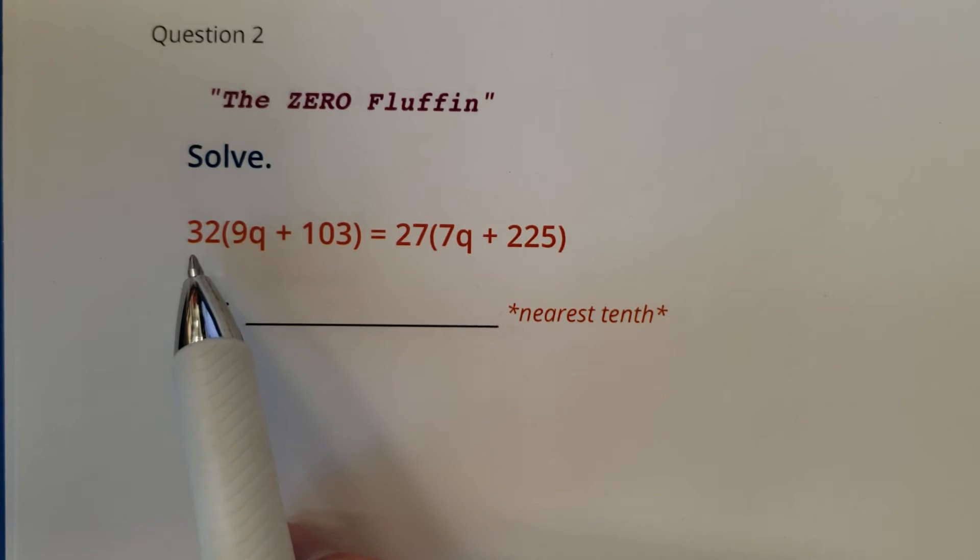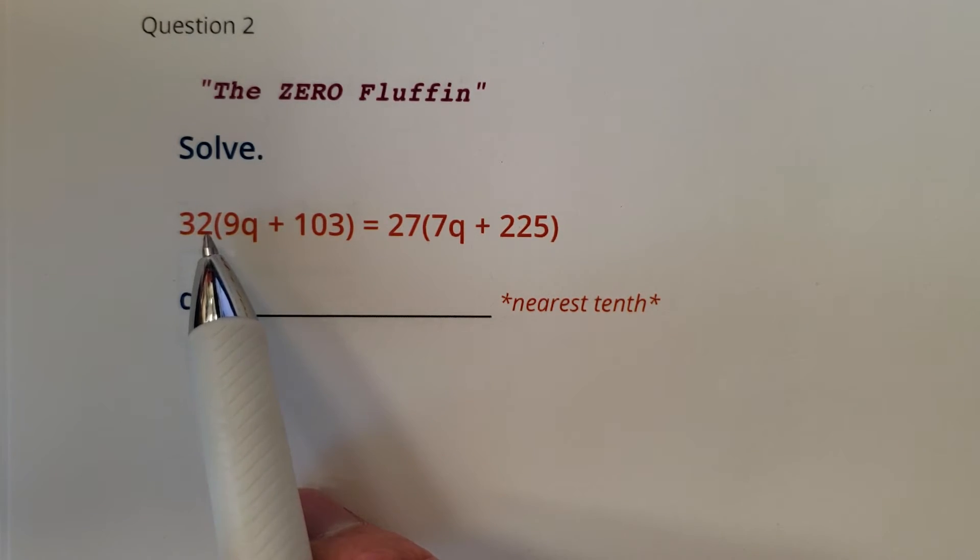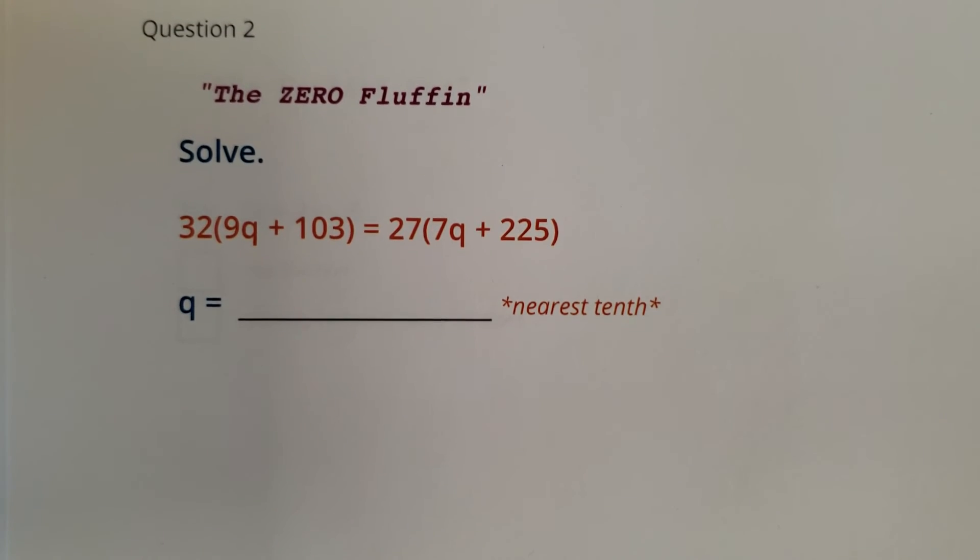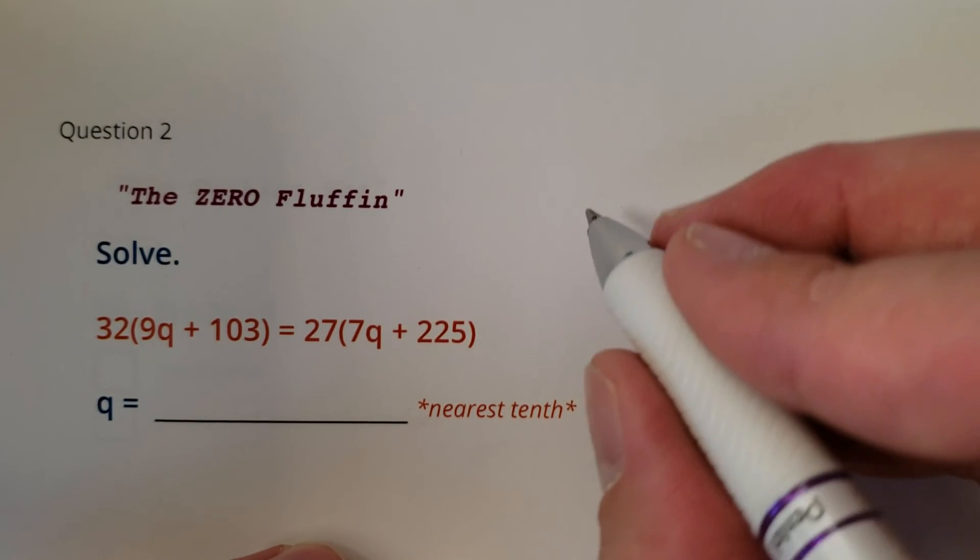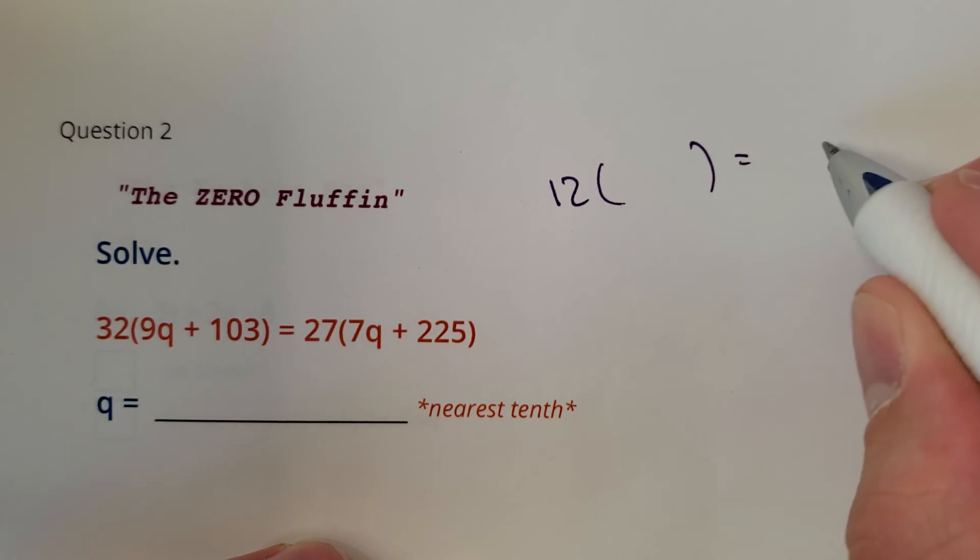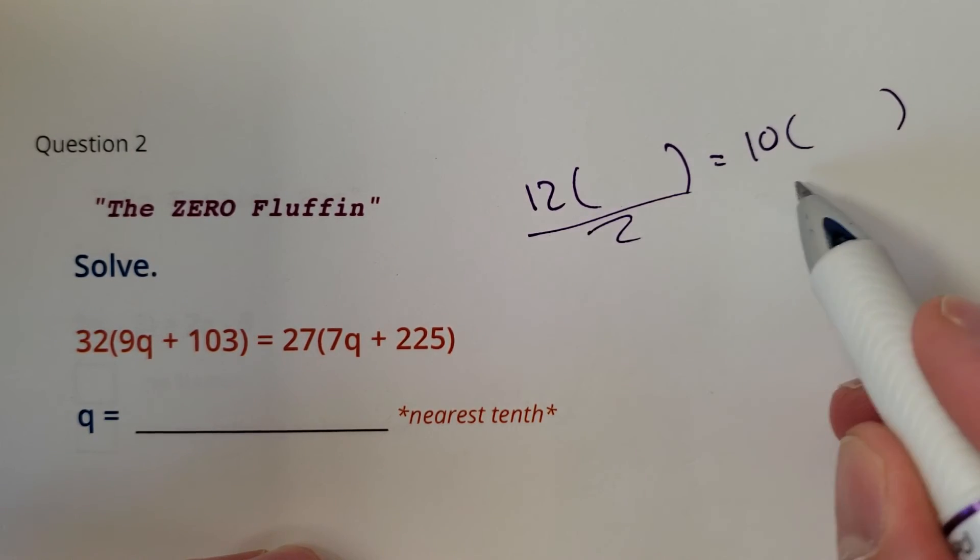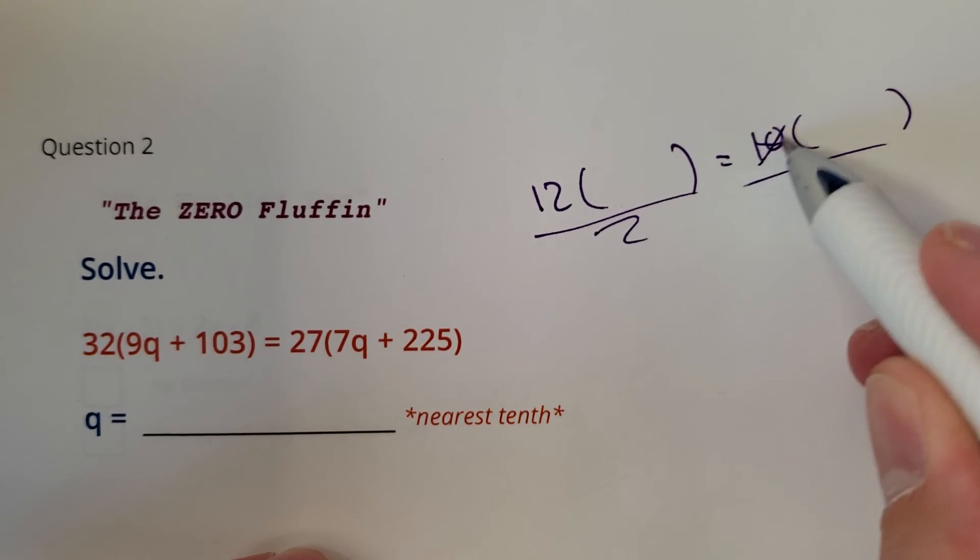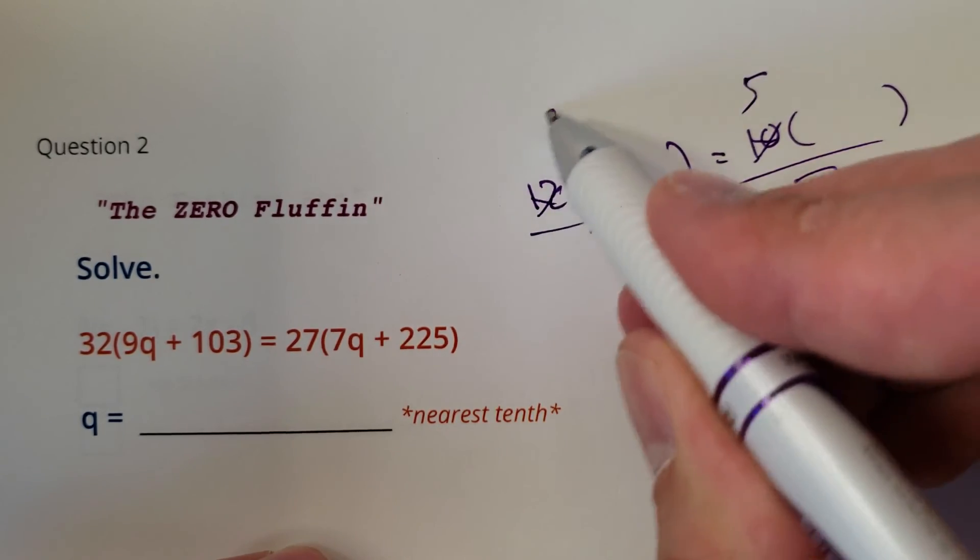Alright, so remember the number one thing to look for is to see if the numbers here have anything in common. 32 and 27 have nothing in common, so I can't even factor out the numbers in front. Remember students, if you saw something like 12 and stuff equals 10 and stuff, you could at least factor out a 2, and then make that a 5 and make that a 6.